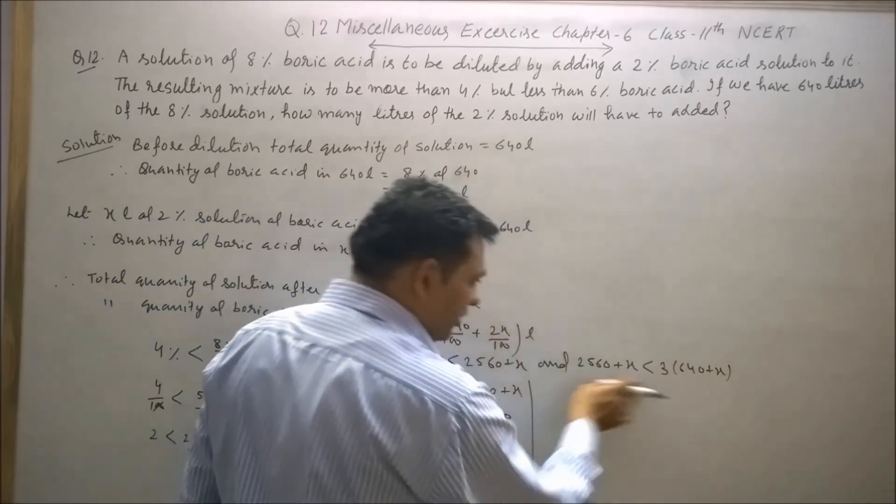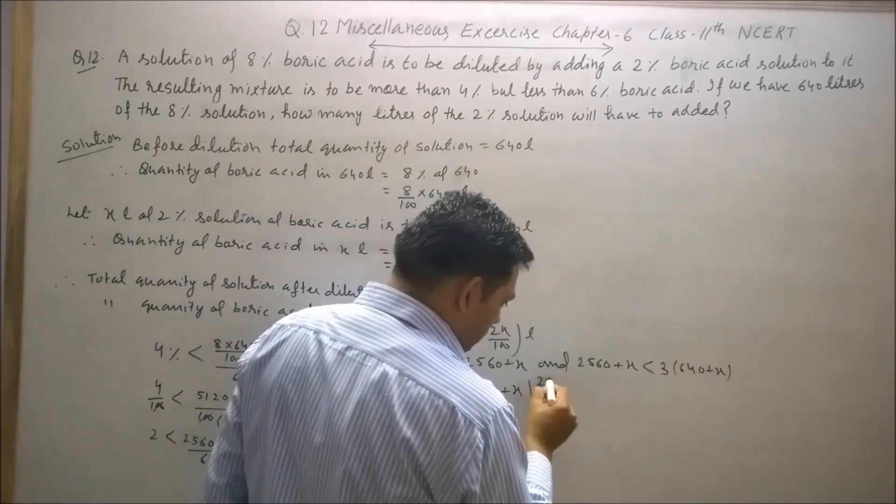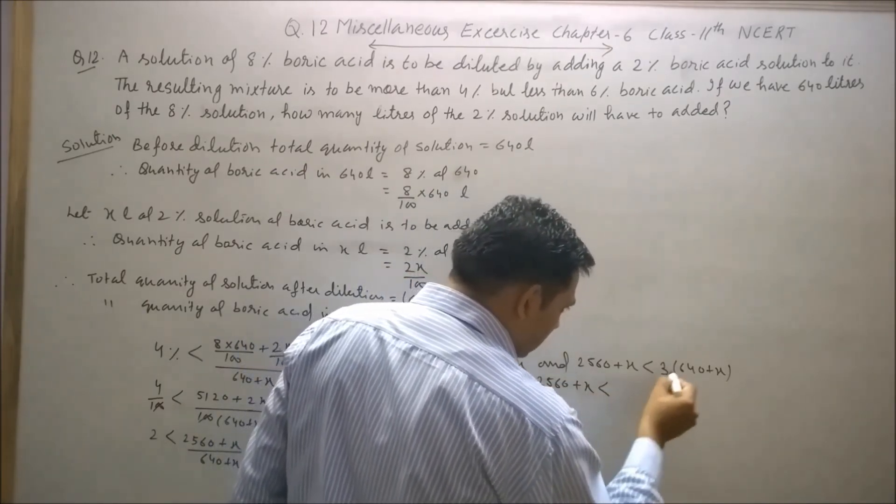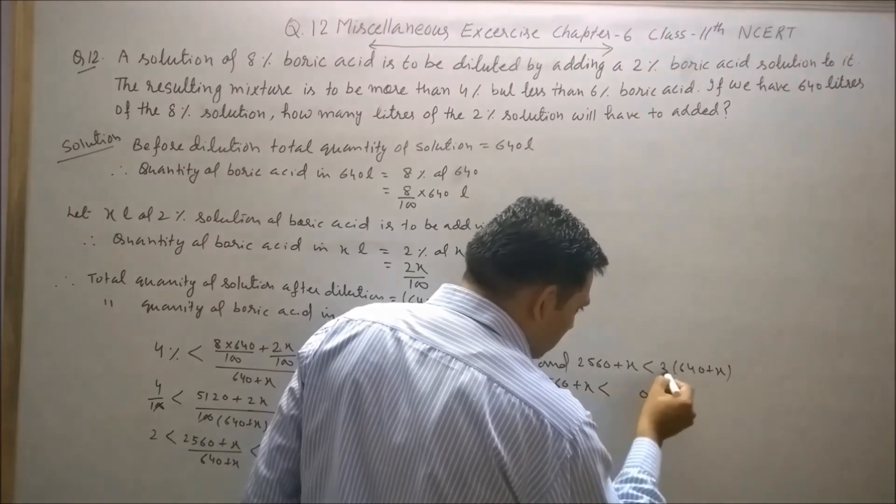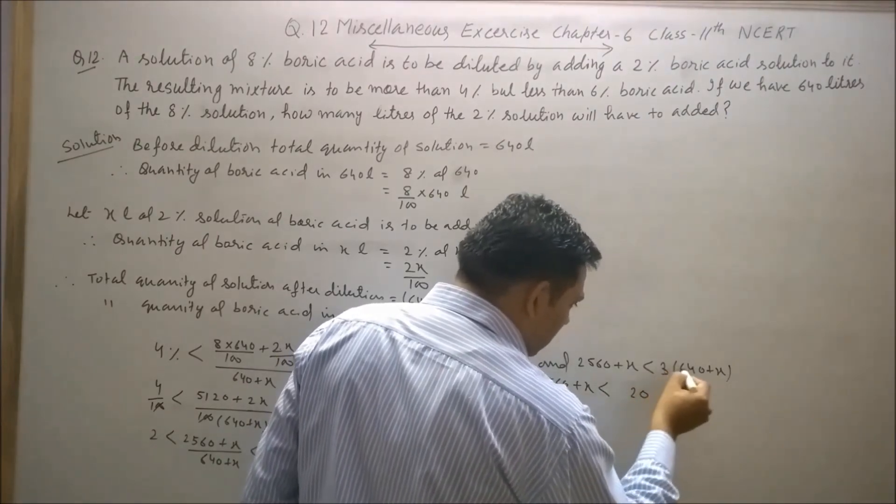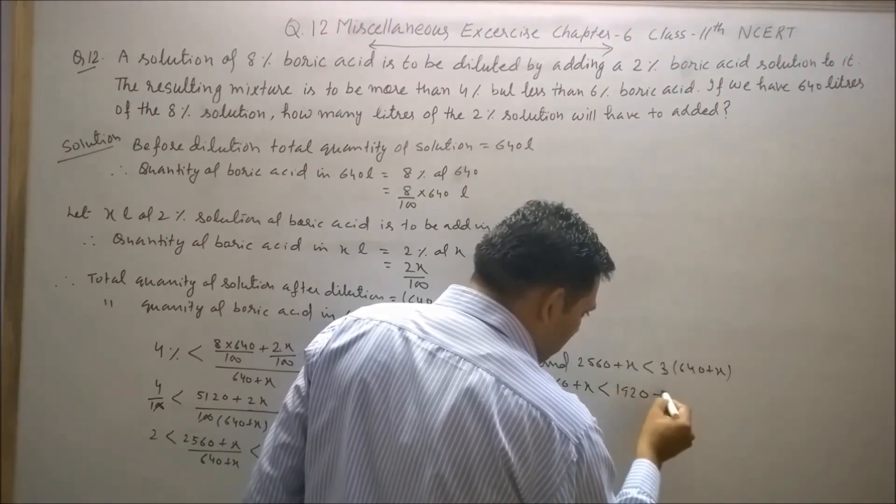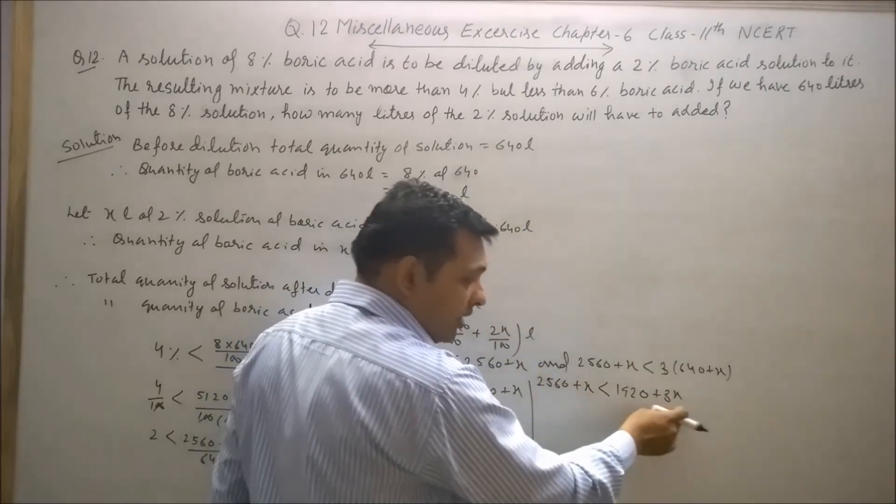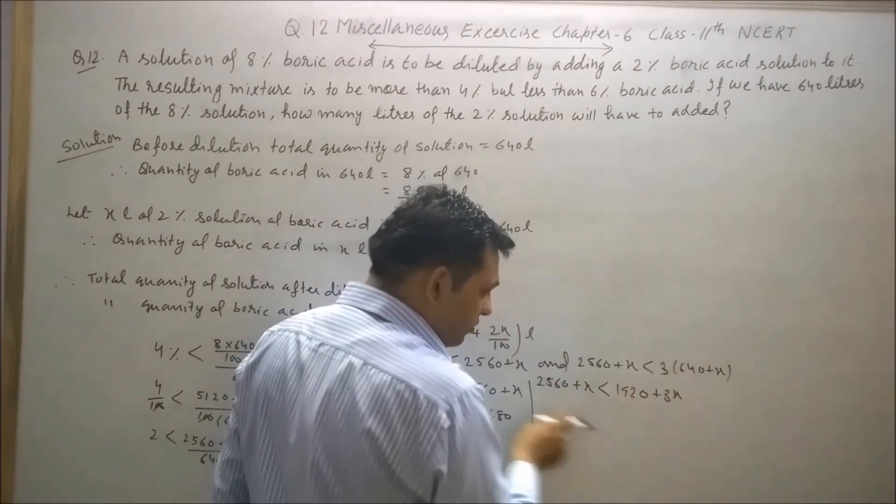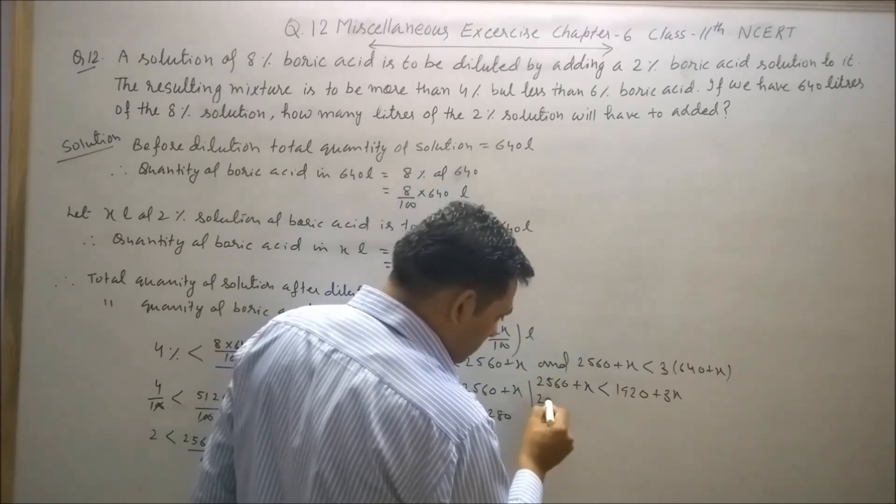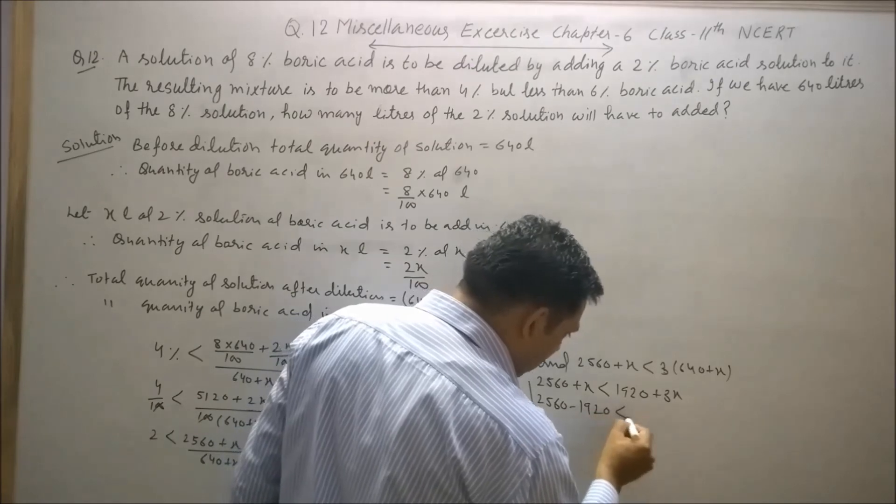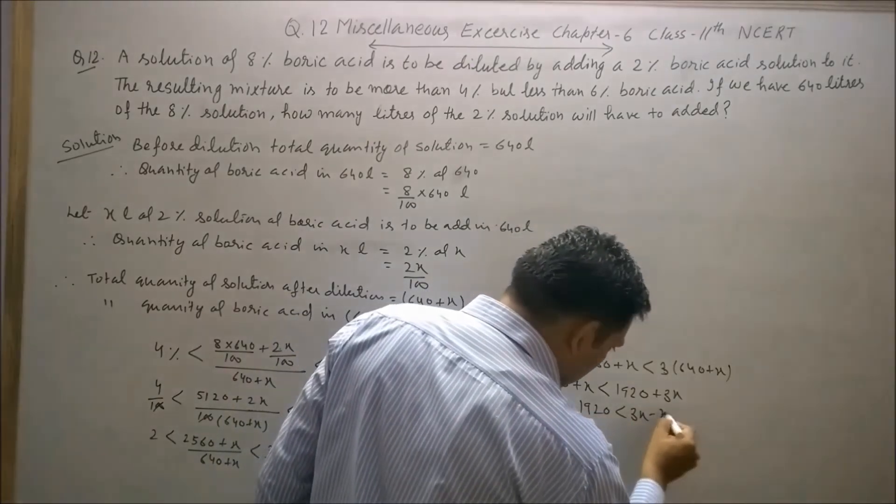Similarly, by solving this part, 2560 plus x is less than 3×640, which is 1920 plus 3x. Now transpose x to the right-hand side and 1920 to the left-hand side. 2560 minus 1920 is less than 3x minus x.